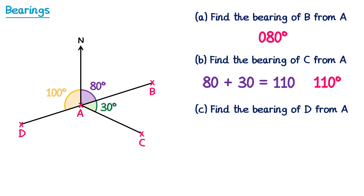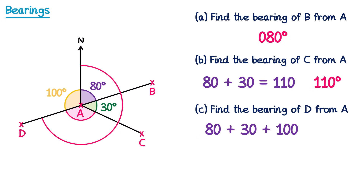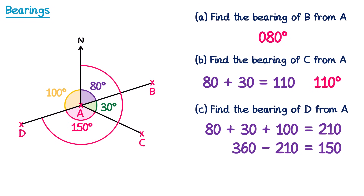For part C, we're going to find the bearing of D from A. This time we need to start at A, facing north and turn clockwise until we face D, which is this whole angle here. But we're missing this red angle. Now we can work this angle out — all of those angles must add up to 360, since they're angles around a point. So if we add together the angles we know, 80, 30 and 100, we get 210. We take this away from 360 and find the red angle is 150 degrees. Now to get the bearing of D from A, we add together 80, 30 and 150, which gives us a total angle of 260. So the bearing is 260 degrees.